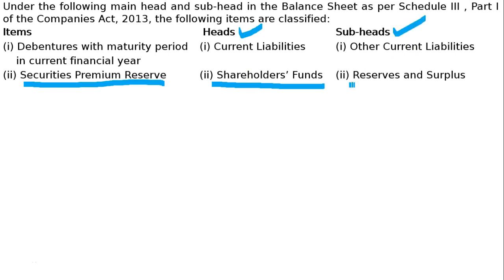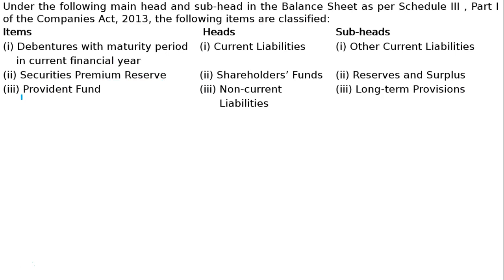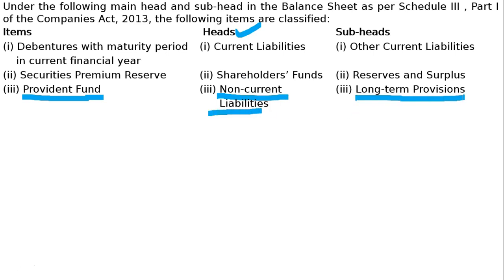Third item: provident fund. Our employees deduct money from their salary and deposit it as provident fund with a government agency, and the employer also contributes some amount on behalf of the employee. This will come under non-current liabilities and under the sub-head long-term provisions, because it is payable when the employee retires.